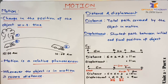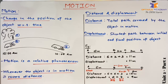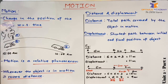Hello dear students, in today's class we are going to discuss about an important topic of your IGCC physics, that is motion. Now what do you understand by the term motion? You see many things around you moving in your day-to-day life, for example the fan above your head is moving, people around you are moving. Motion is defined as change in position of the object with respect to time.